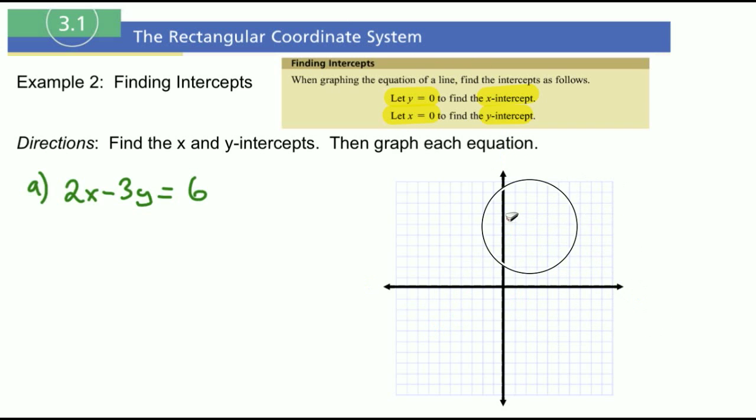Alright, so let's go ahead and find the x and y-intercept here. You can do it rather quickly. So if I want to find the x-intercept first, then I need to let y equal 0. So 2x minus 3 times 0 equals 6. Alright, so 2x minus 0 is just 2x equals 6. And then I divide by 2, so x equals 3.